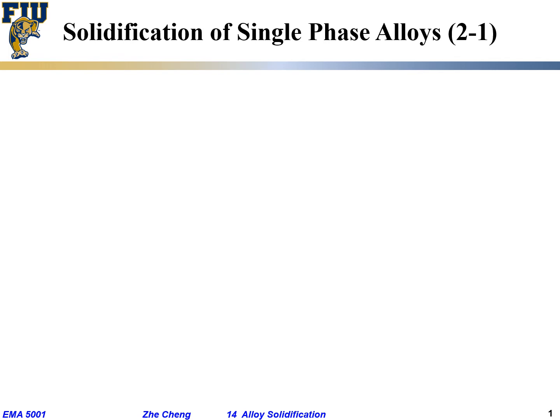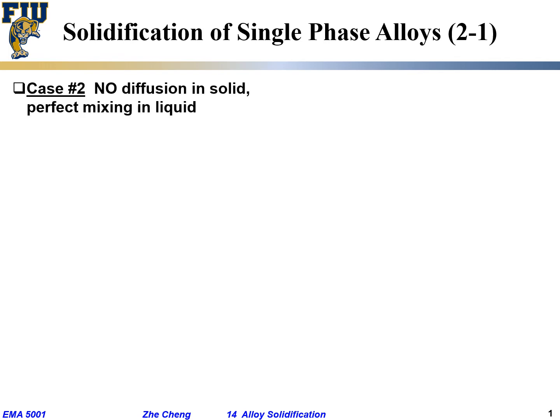Now let's take a look at a second, more realistic case of solidification for an alloy — not a pure element, we're dealing with an alloy of at least two different metallic elements. You can apply the same principles to polymers or ceramics; fundamentally, whether it's ceramics, polymers, or metals, the principle is the same. This second case is slightly faster than our first case.